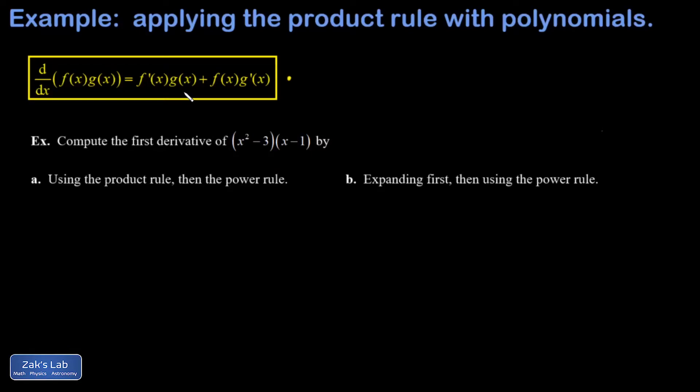This video is a quick reminder of how the product rule works for derivatives. So in this box, I have the derivative of a product of two functions. And it doesn't turn out to be the product of the derivatives of the functions. It's more complicated. You end up with two terms. In each term, you differentiate one of the functions and leave the other one alone.